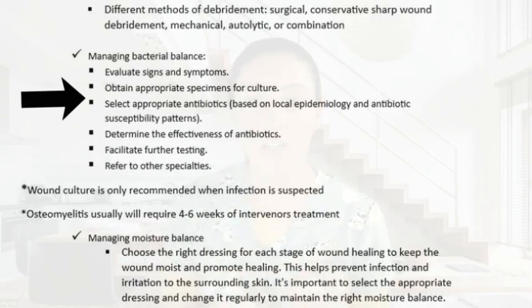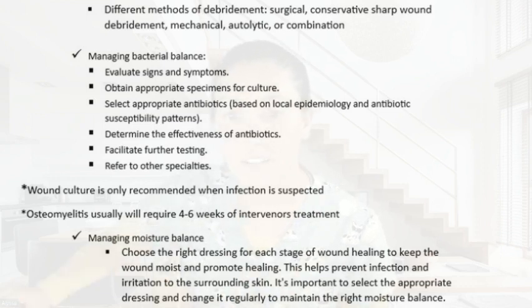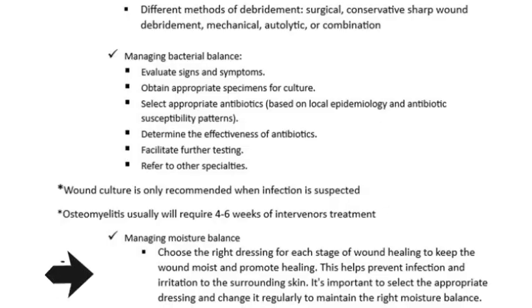To manage bacterial growth, we evaluate for signs and symptoms of infection using NERDS and STONEES criteria, obtain a specimen culture if infection is suspected, select appropriate antibiotics, facilitate further testing if needed, and refer to any specialist required. For osteomyelitis — infection of the bone, which is quite common in patients with diabetes — patients are normally on IV antibiotics for four to six weeks.